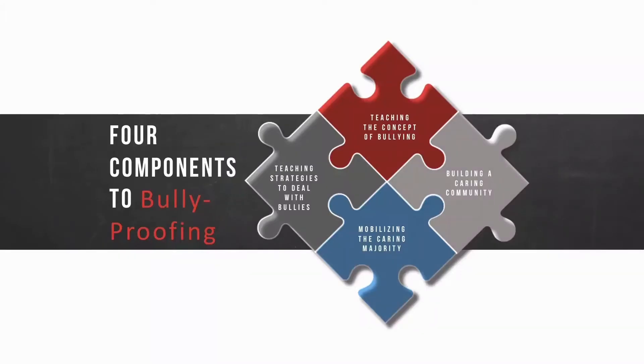The second component, shown in blue, is mobilizing the caring majority. We need to place an expectation on that silent majority that being silent is no longer an option. There are skills and there are ways to report bullying.